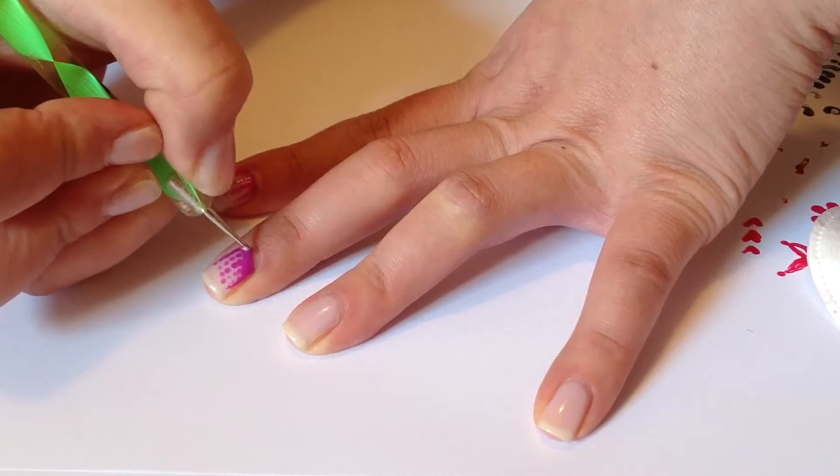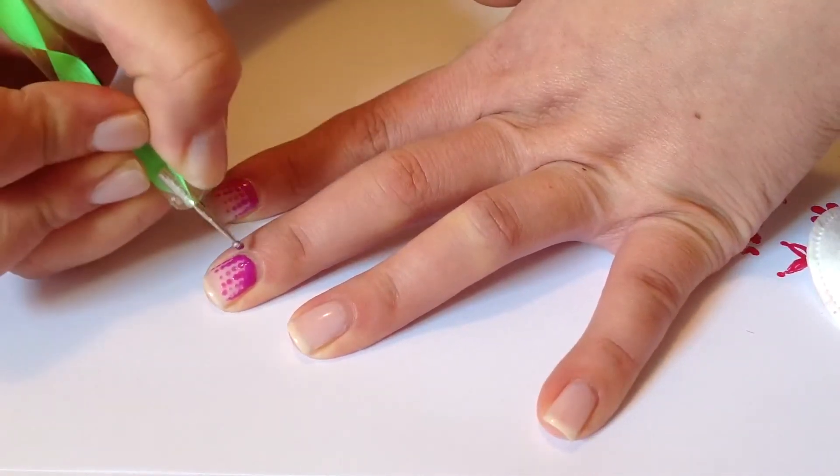Then you're just going to go along the bottom and fill in all the little dots to make the bottom line a little bit more solid.